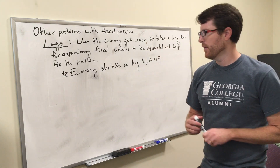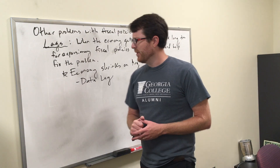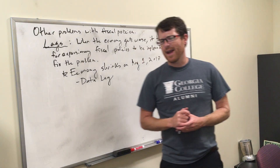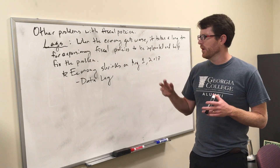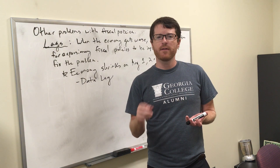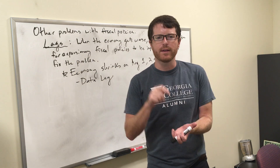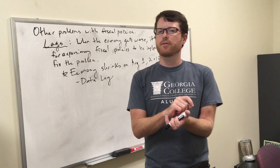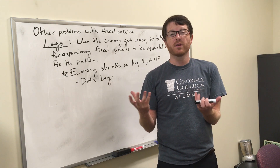If revenues decrease and we have a balanced budget, that means the government has to spend less. Remember, we have a balanced budget — so if one changes, the other has to change; they move in unison. When revenues decrease, the government must decrease its spending as well. And when this occurs, aggregate demand decreases due to contractionary policies.